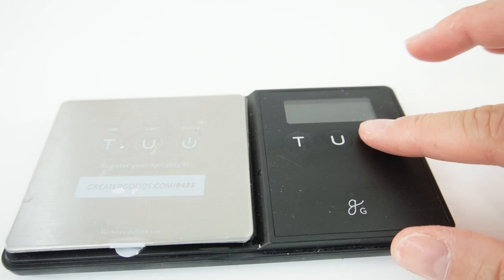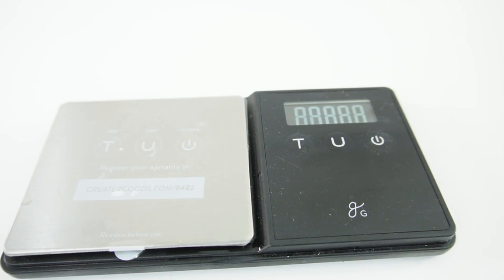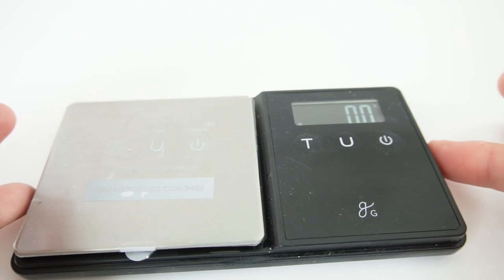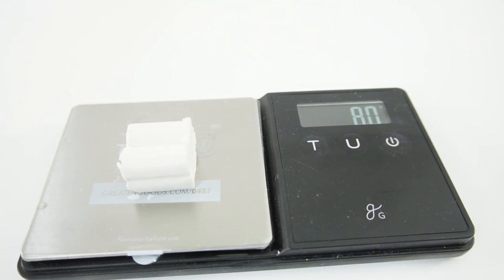So the first thing we're going to do is measure out the clay. We're going to use 8 grams because this is the amount that I used for the other charms. Perfect.